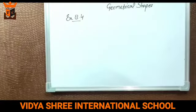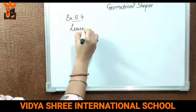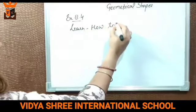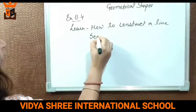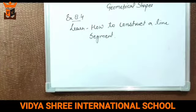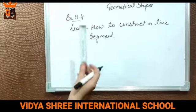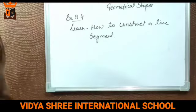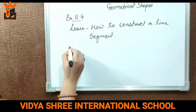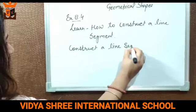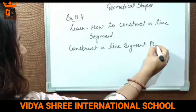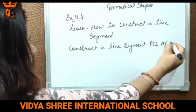Listen students, in this exercise 8.4, today we will learn how to construct a line segment. We will learn how to draw or construct a line segment. So let's cover the two things that you need. First of all, you have to construct a line segment PQ. Suppose we are constructing a line segment PQ of length 5 cm.